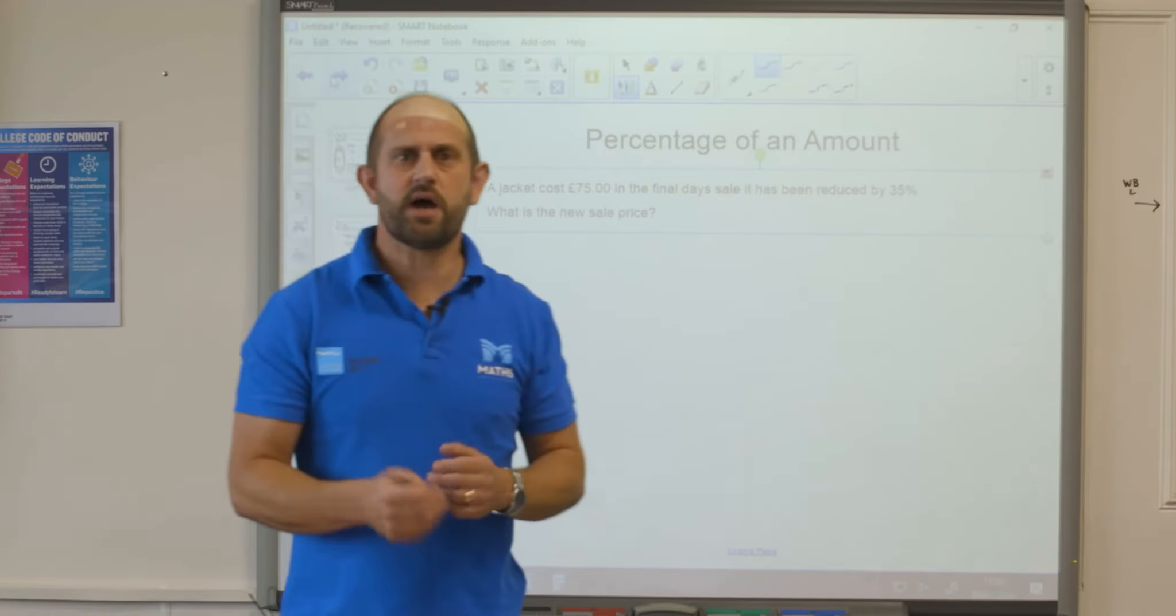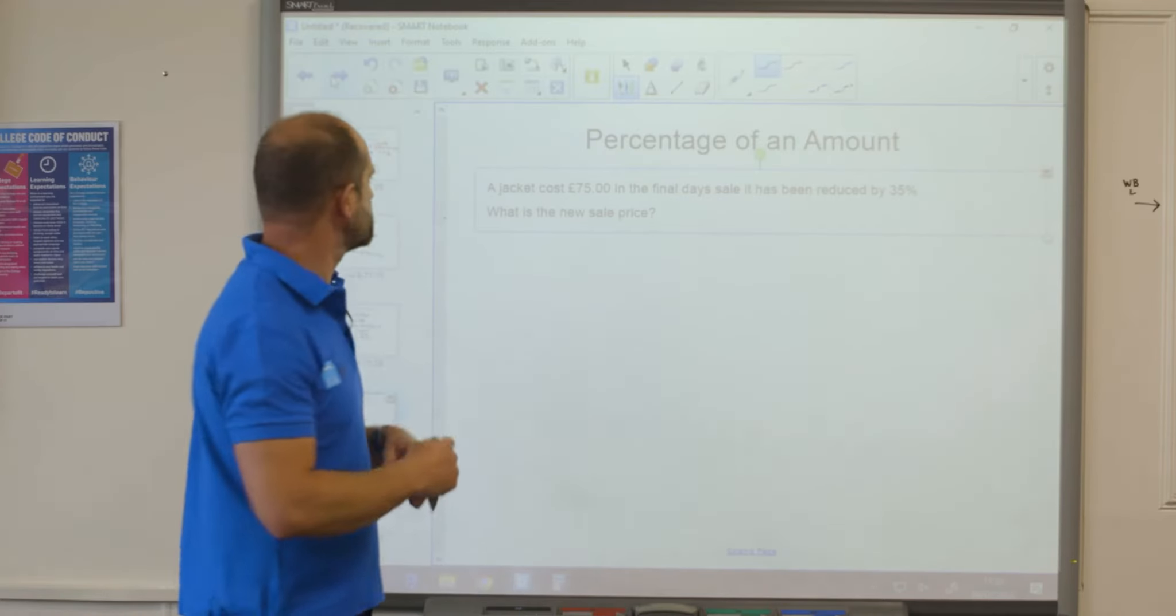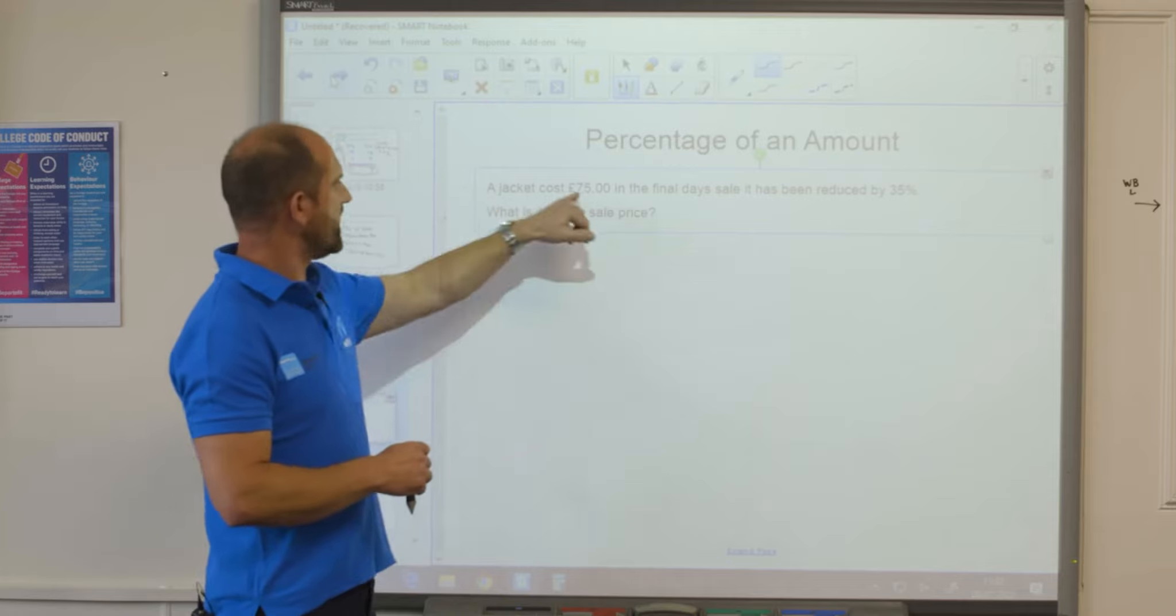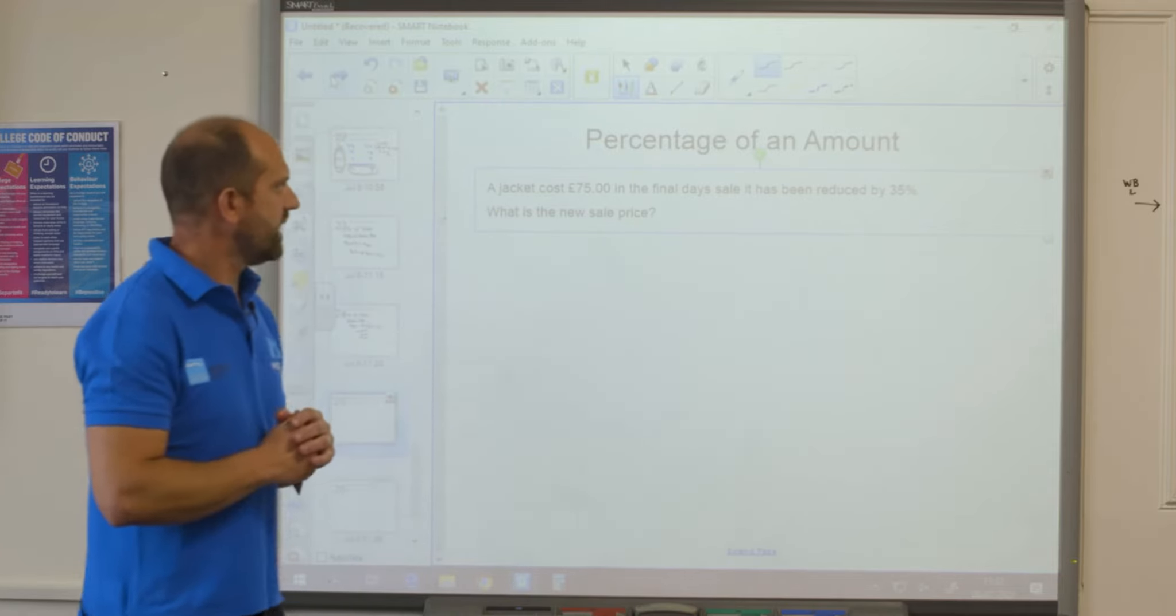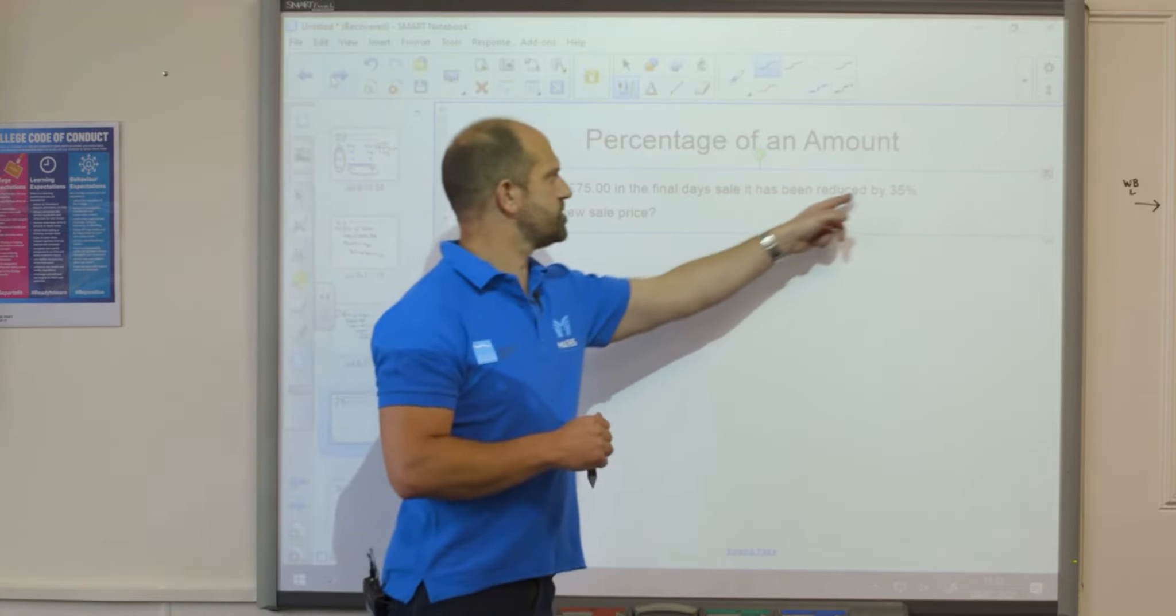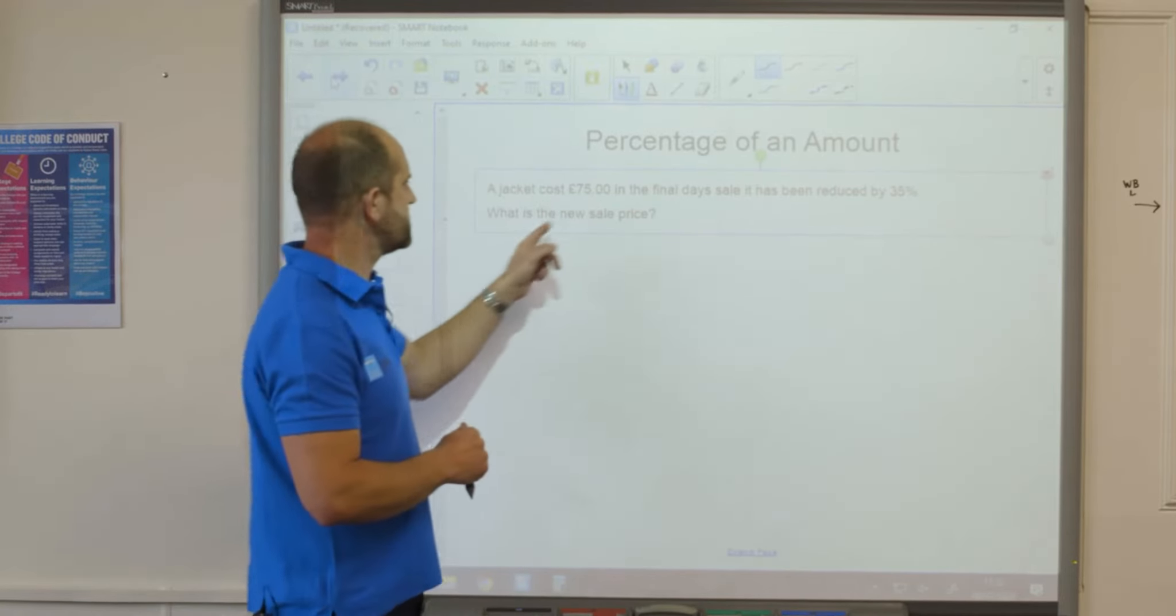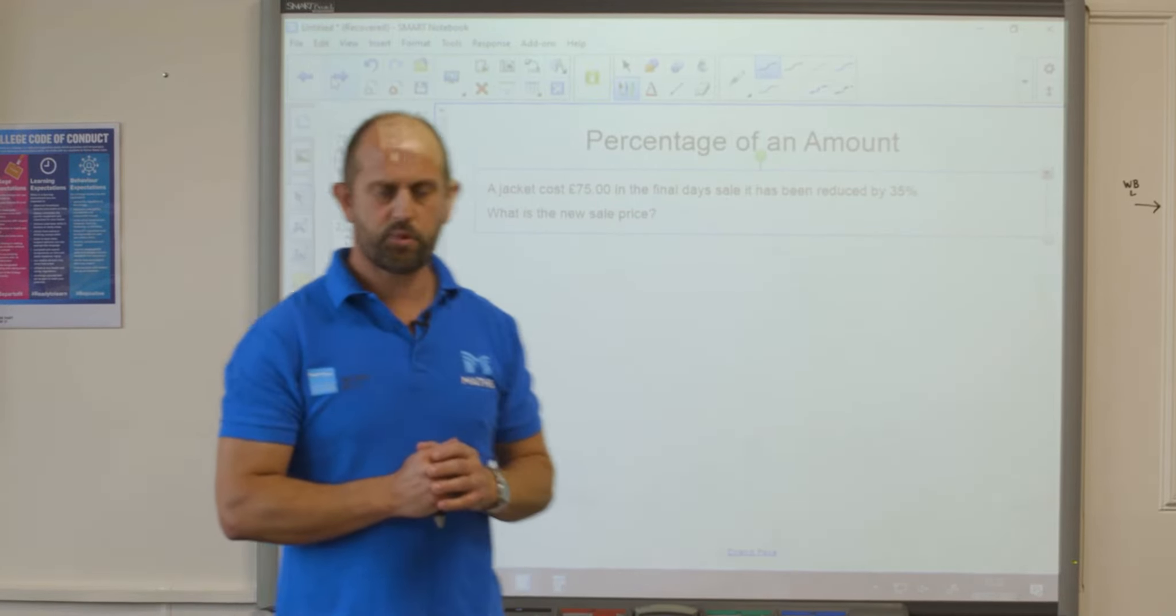Now we're going to look at an exam style question where these questions often crop up. So a jacket costs 75 pounds. In a final day's sale it's been reduced by 35%. What is the new sale price?